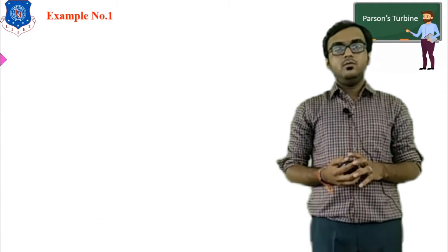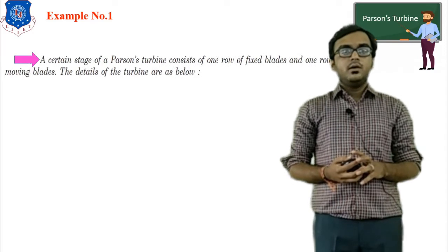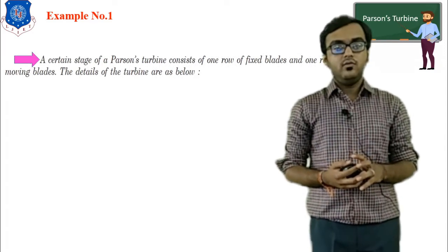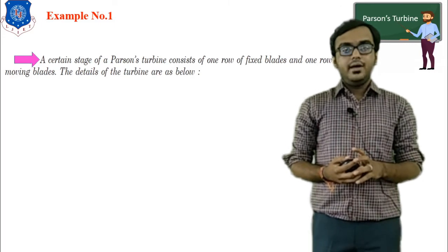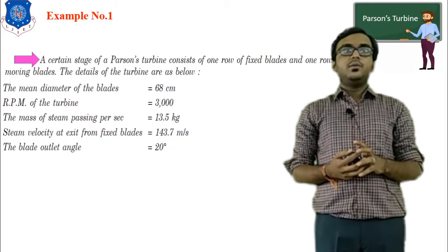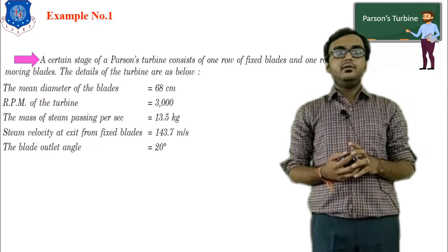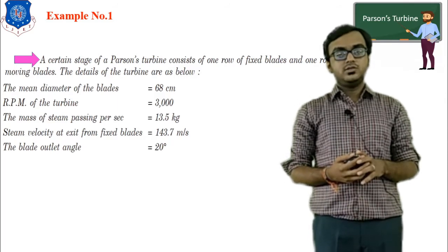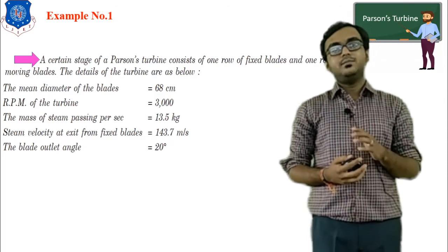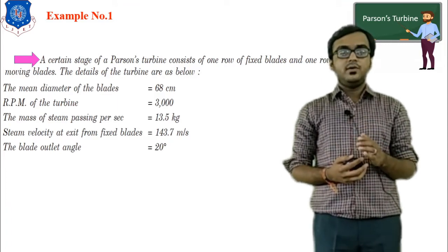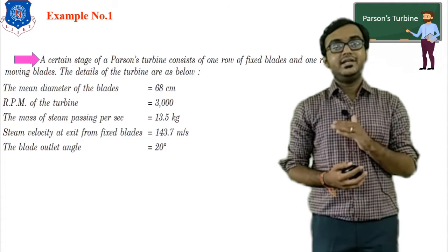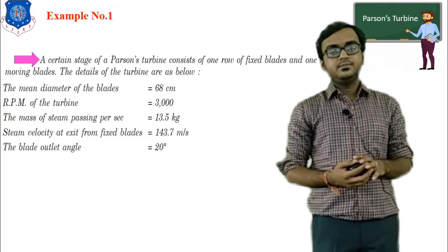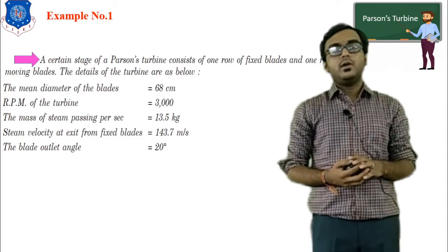Let's begin with example number one. In a certain stage of a Parsons turbine consisting of one row of fixed blades and one row of moving blades, the following details are given: mean diameter of blade is 68 cm, RPM of turbine is 3000, mass of steam passing per second is 13.5 kg, and the relative velocity at outlet from the fixed blade is 143.7 m/s, while the blade outlet angle is 20 degrees.